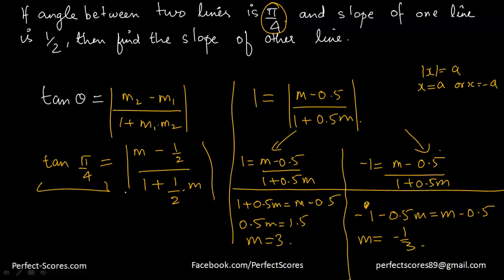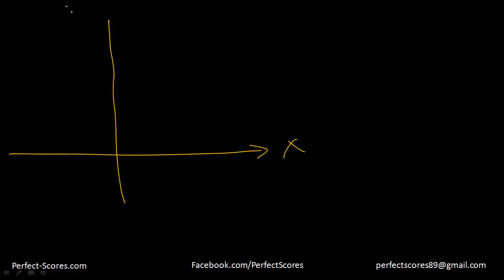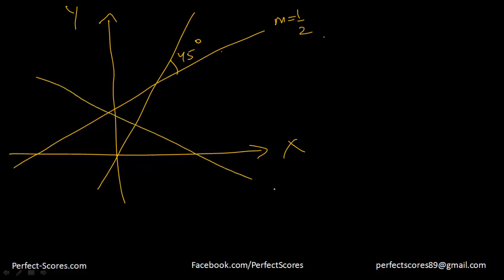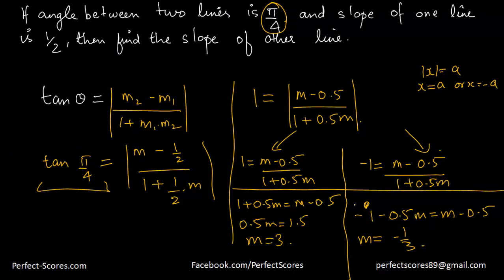So if we draw this: with the x and y axes and the original line having slope 1/2, the other line can either be drawn making a 45-degree angle on one side — giving slope 3 — or making a 45-degree angle on the other side — giving slope -1/3. This is the generalization the formula provides.